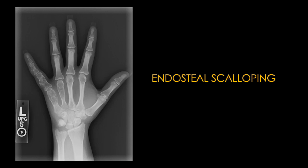This is called Ollier's disease. I want you to pay attention to the cortex of the index finger and the little finger. The cortex of the index finger metacarpal bone is normal and thickened, as we can see with this blue line. However, in the little finger we have an expansive lesion causing cortical thinning and scalloping of the endosteum — this is what we mean by endosteal scalloping: a medullary cavity lesion that is growing and causing scalloping of the inner surface of the cortex.